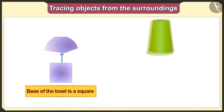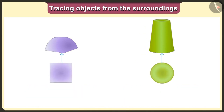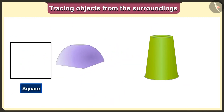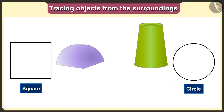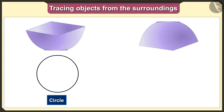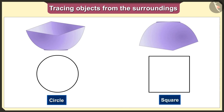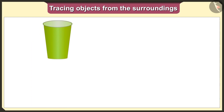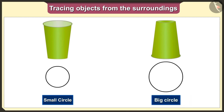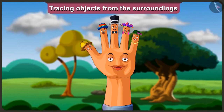The base of the bowl is square and the base of the glass is a circle. If we keep the bowl facing downward and trace it, then we will get the square shape. And if we keep the glass facing downward and trace it, then we will get the circle shape. So if we keep the bowl straight and trace it, we get a circle shape; upside down gives a square shape. If we keep the glass straight, we get a small circle; upside down gives a bigger circle.